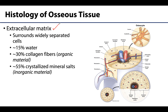Extracellular matrix is the material located between widely spaced cells, and it will differ considerably between different types of tissues. It's really the structure of the extracellular matrix that determines much of the tissue's qualities. For example, in cartilage the extracellular matrix is firm but more pliable or flexible, while the extracellular matrix of bone will be much harder and less flexible. The major components of bone extracellular matrix will be water, organic materials — mainly collagen fibers — and importantly, inorganic materials that are crystallized mineral salts.